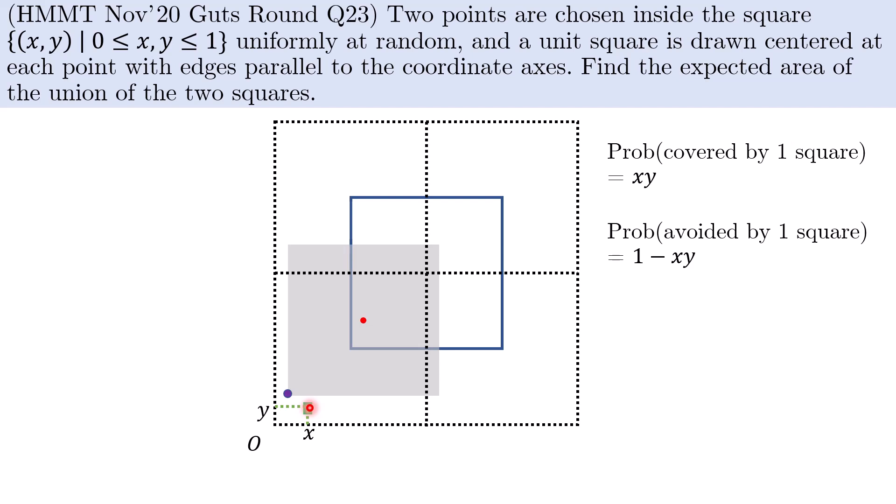The probability now that it is not covered by either of the two squares is then the square of that: (1 - xy) quantity squared. And finally we have to flip it around again to get the probability that it is covered by either of the two squares being 1 - (1 - xy) quantity squared.